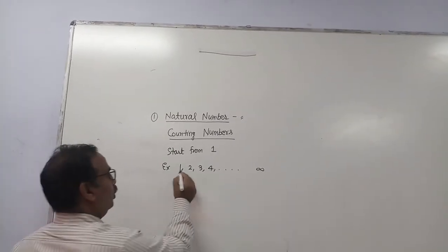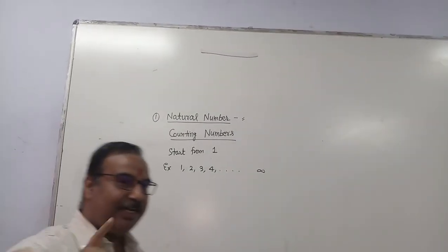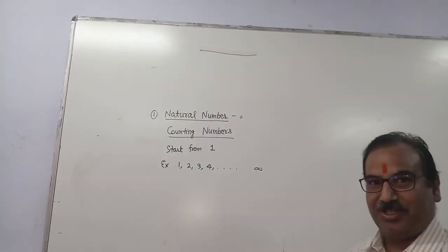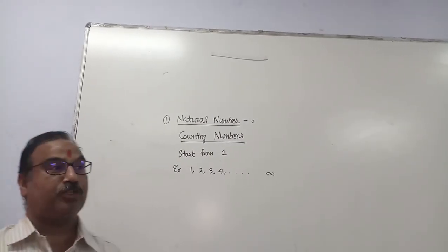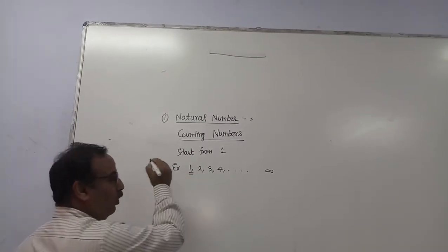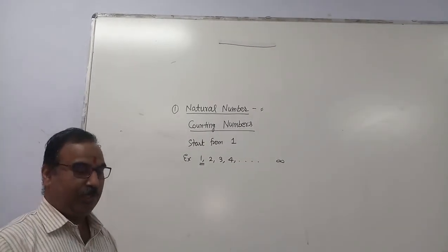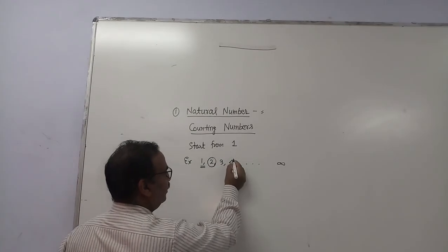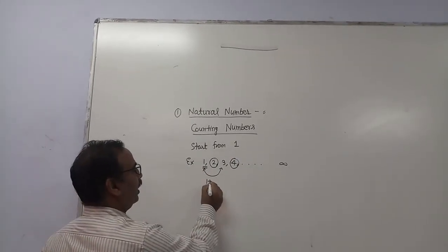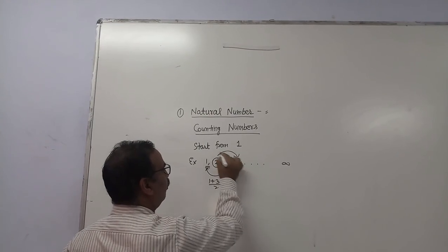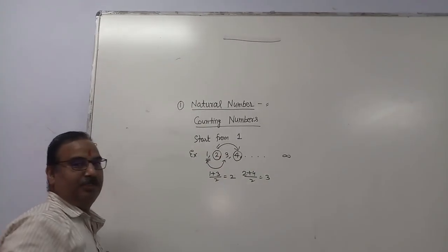And you may remember, 2 is the successor of 1, 3 is the successor of 2, 4 is the successor of 3. You may have at most one successor of every number. But can we find the predecessor of every natural number? The answer is no, because 1 has no predecessor which is natural. Remember one thing more: every number is the average of its adjacent two numbers. 1 plus 3 divided by 2 is 2, 2 plus 4 divided by 2 is 3. So every number is the average of its adjacent numbers.